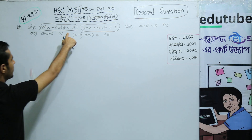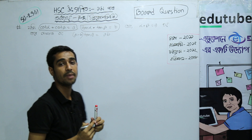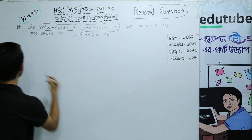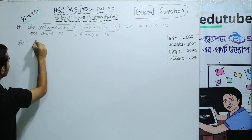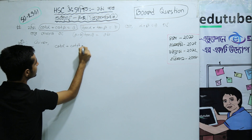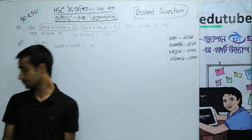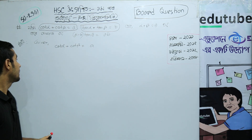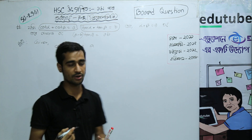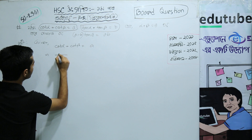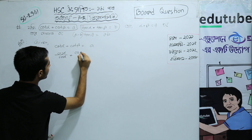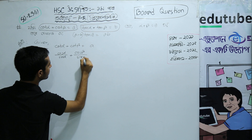Let me tell you the first thing. cot α plus cot β equals A. So the answer involves 1/A and 1/B. We know cos α / sin α plus cos β / sin β equals A.